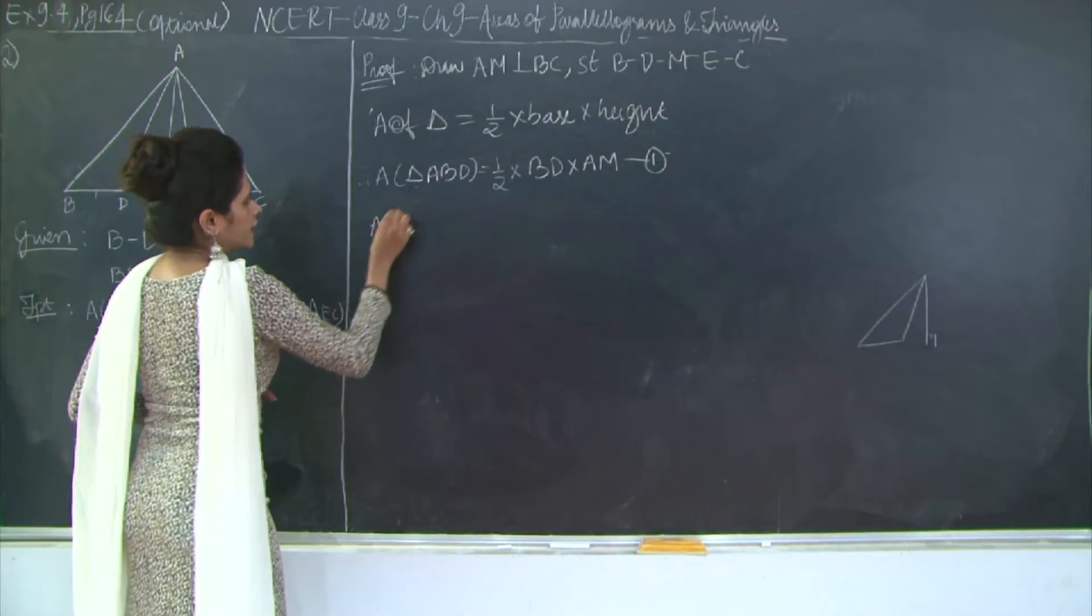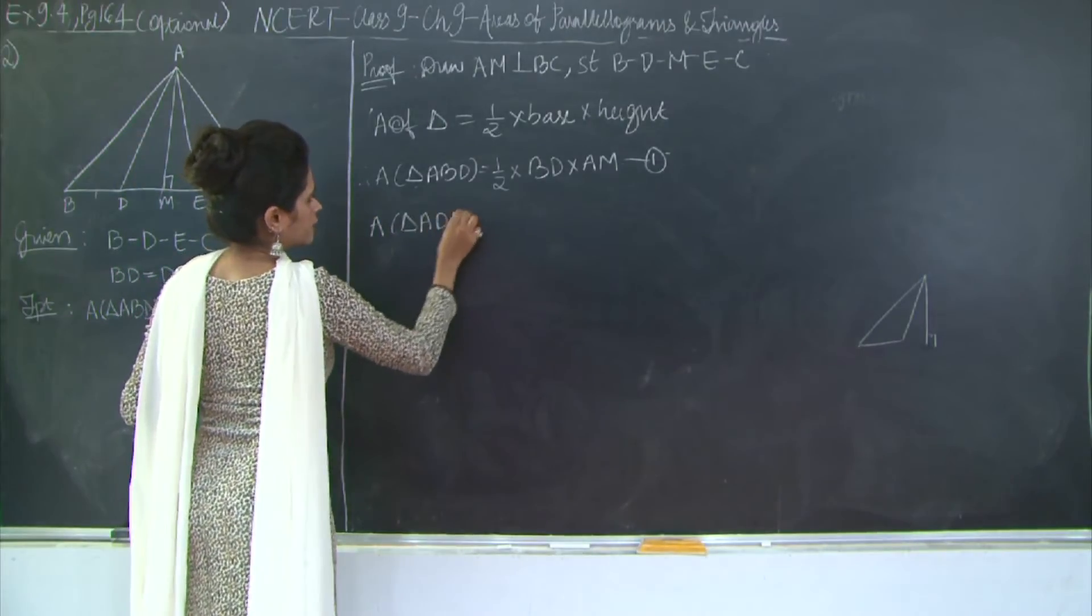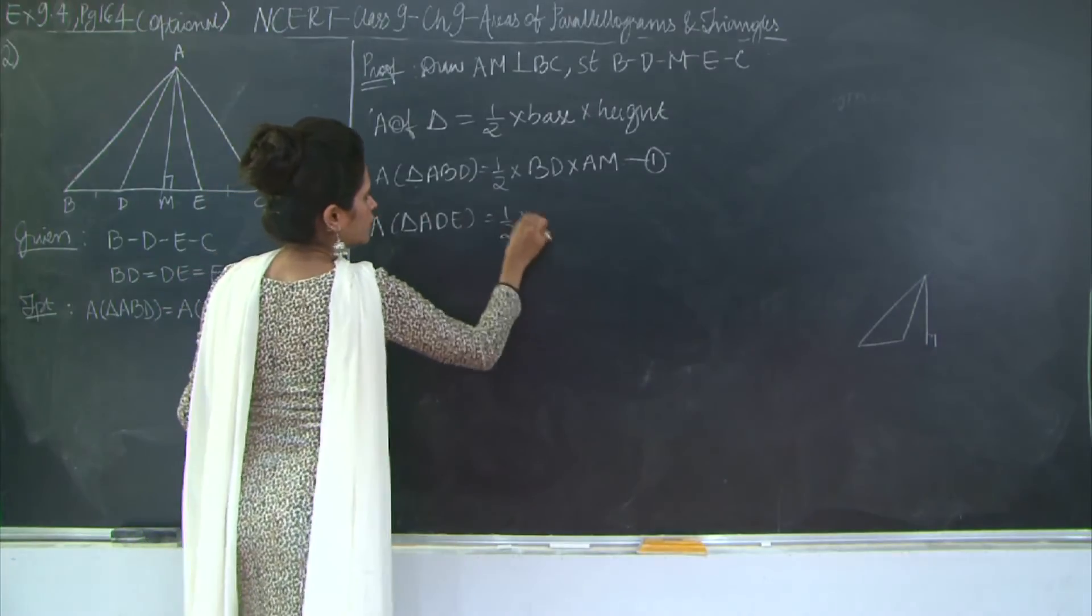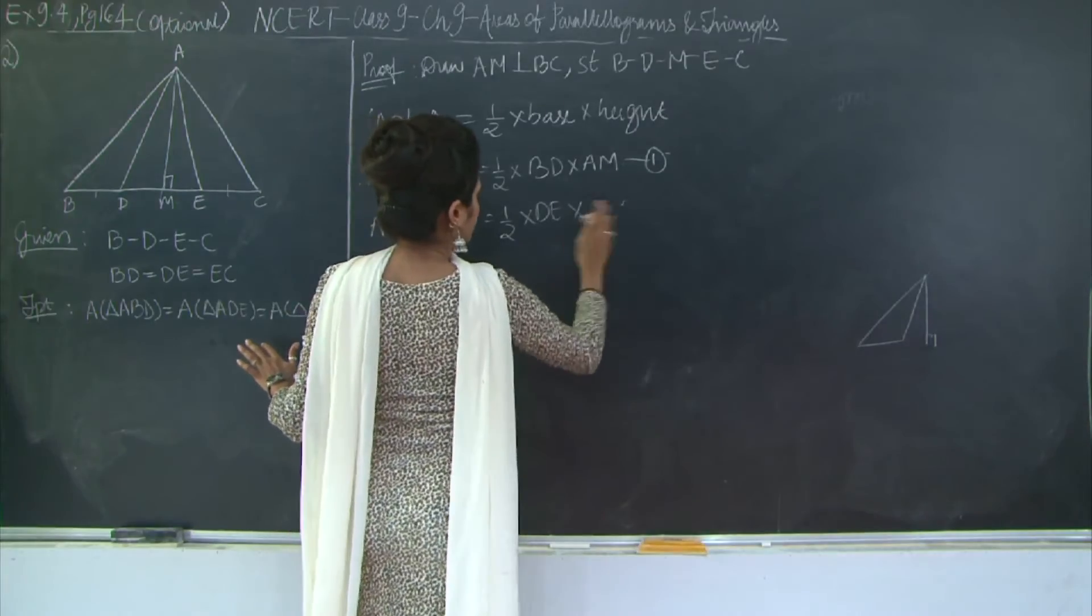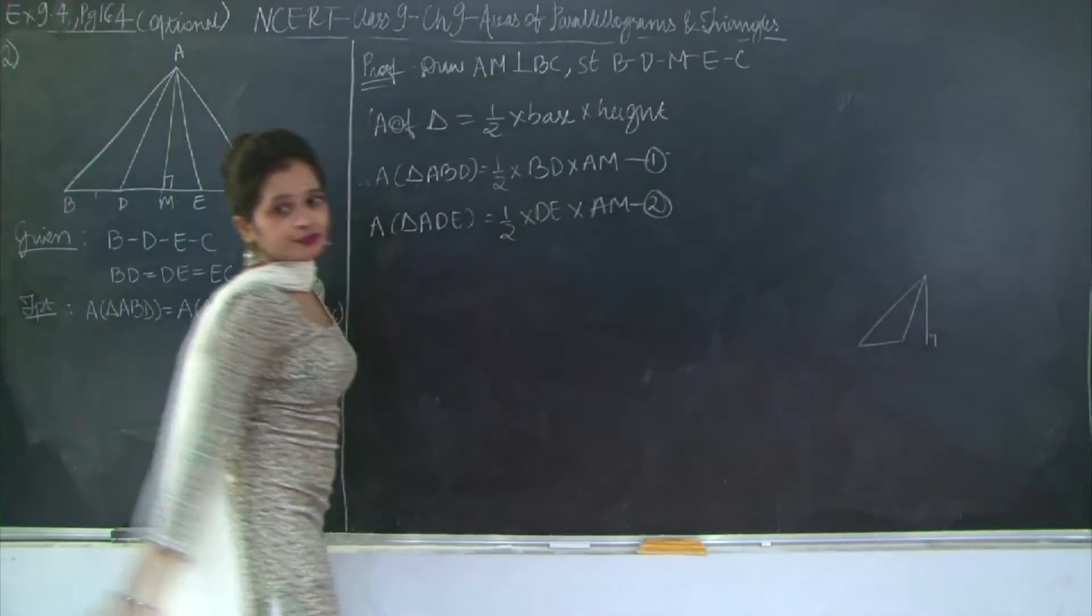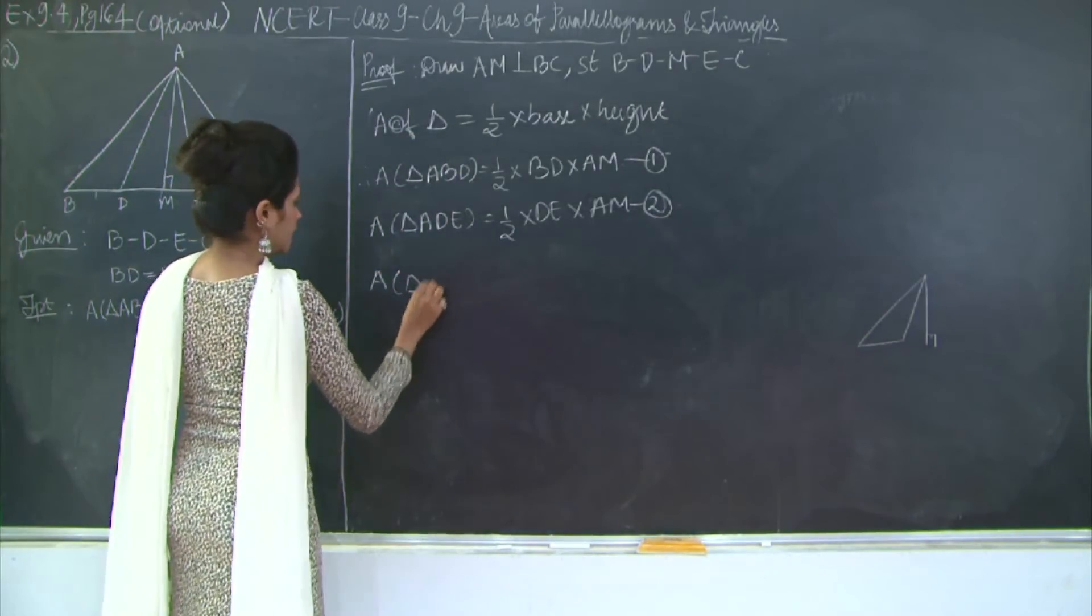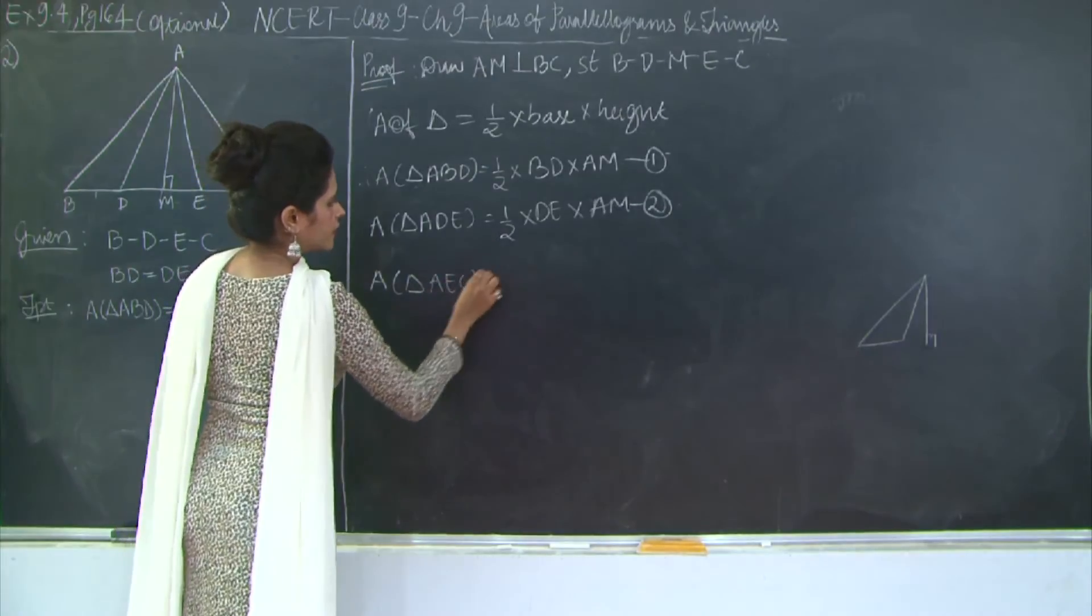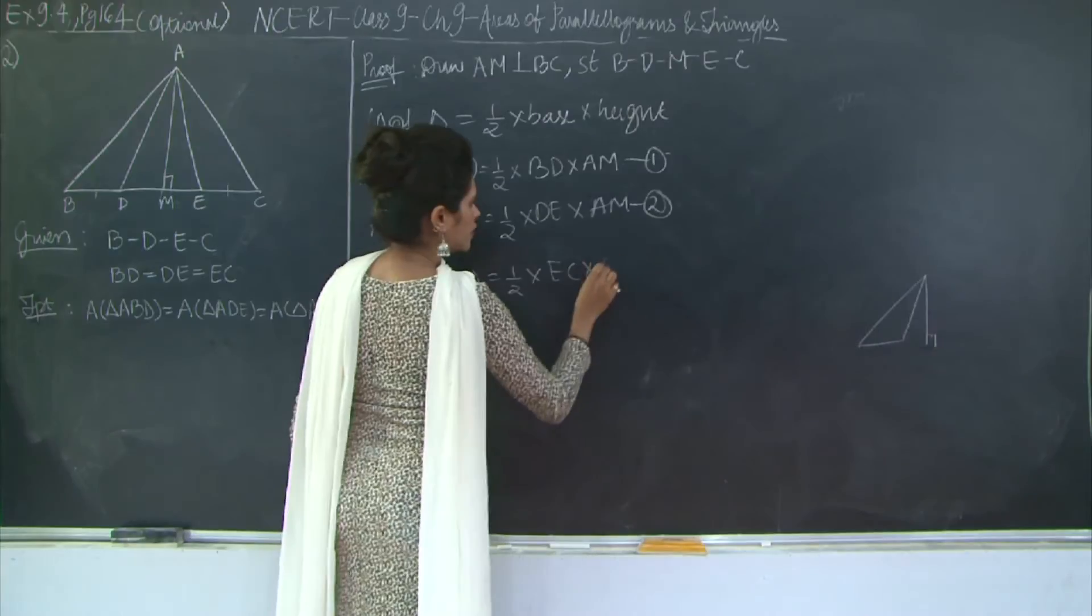Let's mark this as 2. Then area of triangle AEC is half into EC into AM.